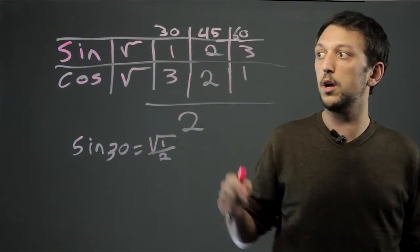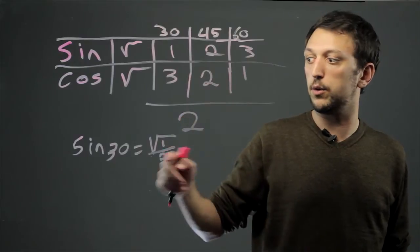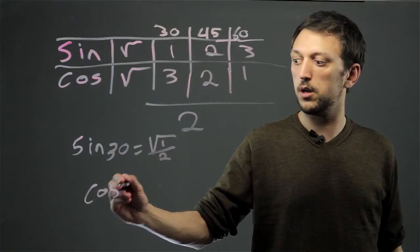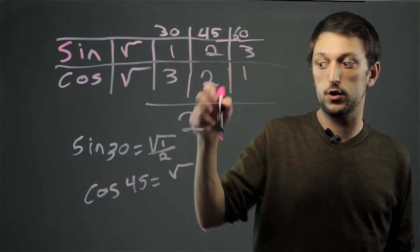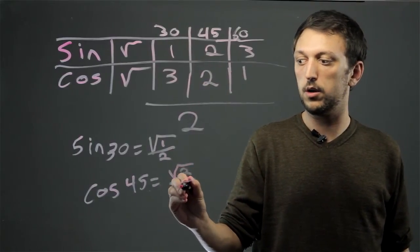If you want to know cos of 45, it's going to be cos 45 equals root 2 over 2.